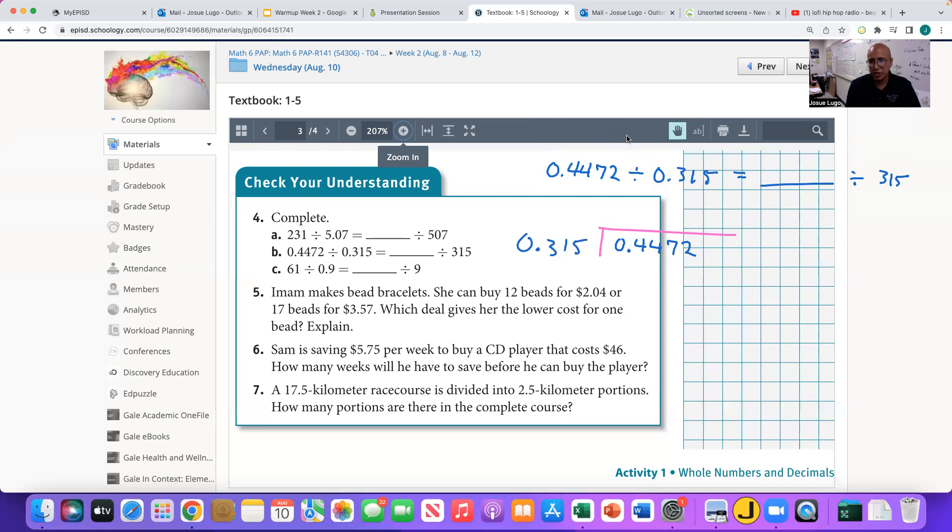So we are given, first number goes inside, 0.4472 divided by 0.315. Again, we do not like decimals on the outside. So I'm going to take that decimal and I'm going to shift it until it's a whole number one time, two times, three times. So this is now 315. Good.